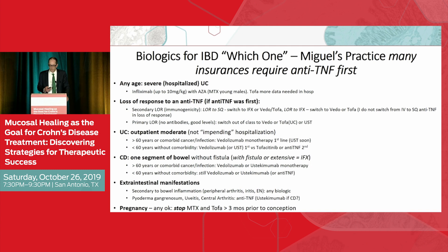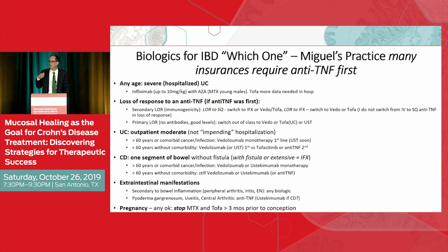Finally, pregnancy. Methotrexate is contraindicated — we've said that multiple times. Tofacitinib I'm not recommending in pregnancy right now — I try to have patients off it for about three months before conception, though it has an incredibly short half-life, clearing the body in 12 to 24 hours. One pearl: if the patient has poor renal function with an elevated creatinine, clearance will be slower since tofacitinib is renally cleared. I'm not using tofacitinib in pregnancy today, even if second or third trimester may eventually prove okay.